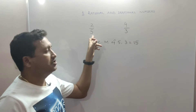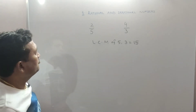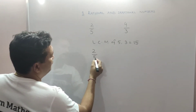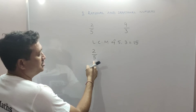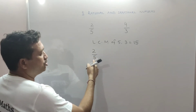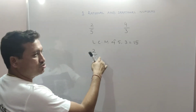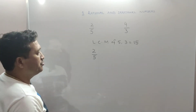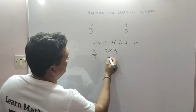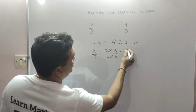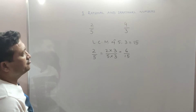Now we are going to convert the denominator of both fractions to 15. The first fraction is 2 upon 5. To make the denominator 15, I need to multiply numerator and denominator by 3, because 5 times 3 is 15. So we write 2 into 3 upon 5 into 3, which gives us 6 upon 15.